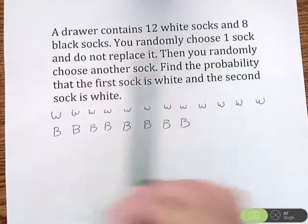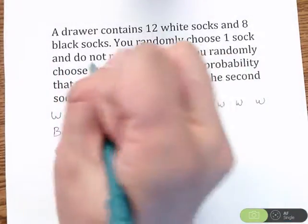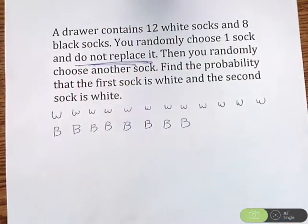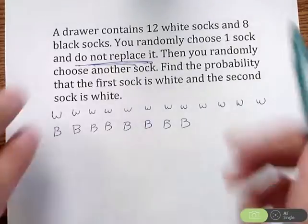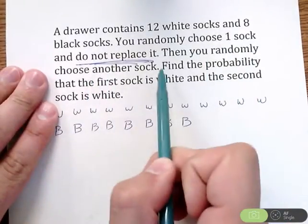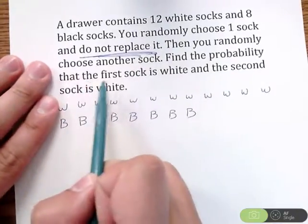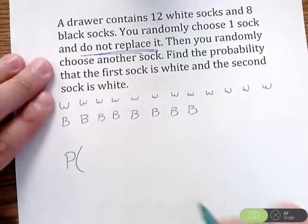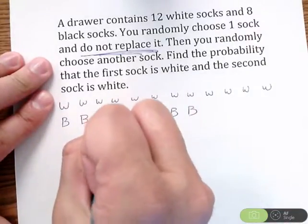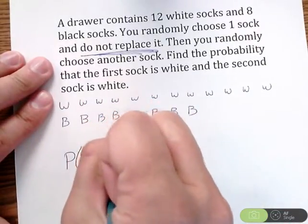We randomly choose one sock and do not replace it, meaning we are not going to put it back. We're going to pull it out and keep it. Then you randomly choose another sock. Find the probability that the first sock is white.